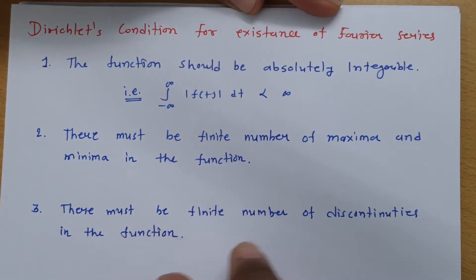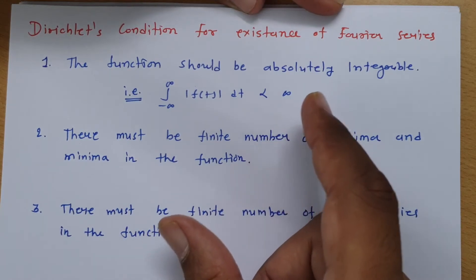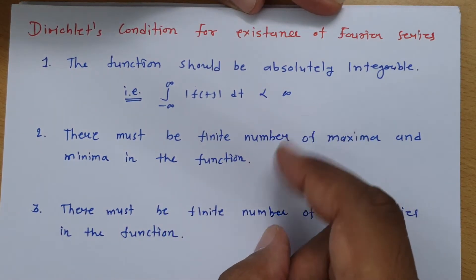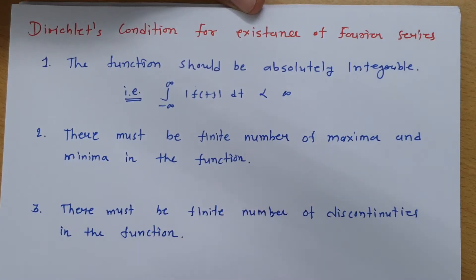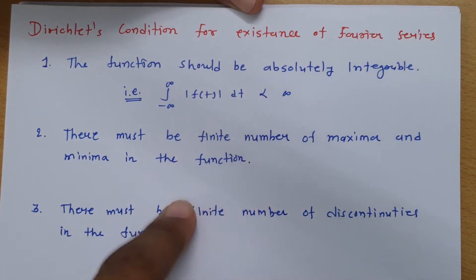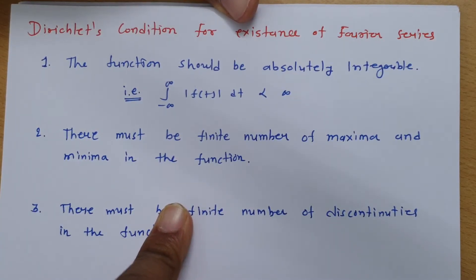The third condition is that there must be a finite number of discontinuities in the given function. So if a signal satisfies all three conditions, then the existence of the Fourier transform is possible — we can compute the Fourier transform of the given signal. But if these three conditions are not satisfied, we cannot have the Fourier series expansion of any signal.